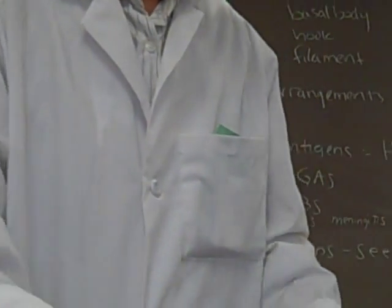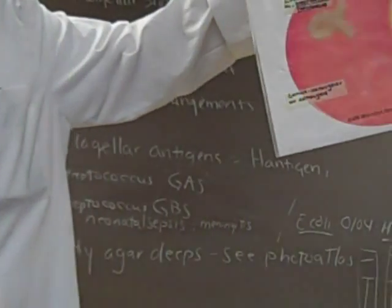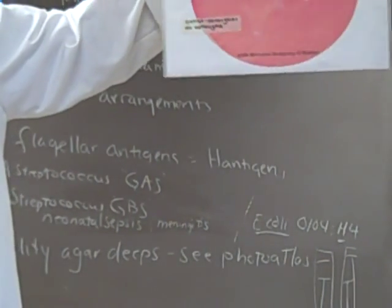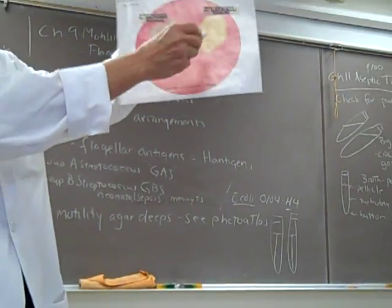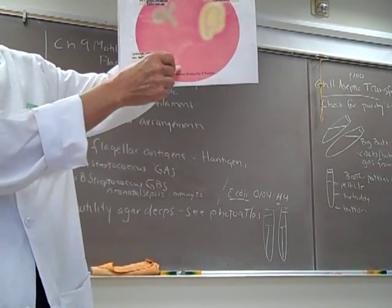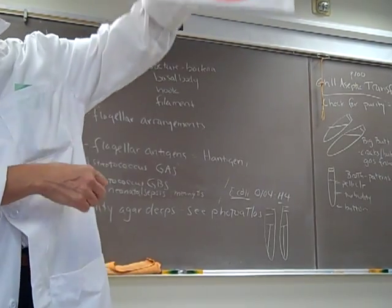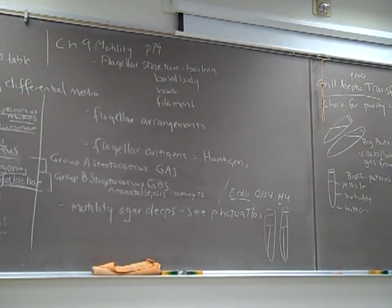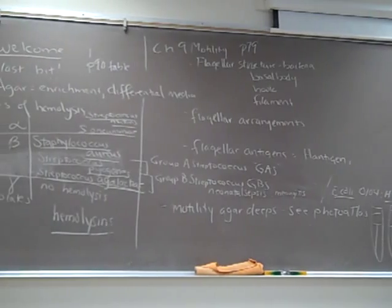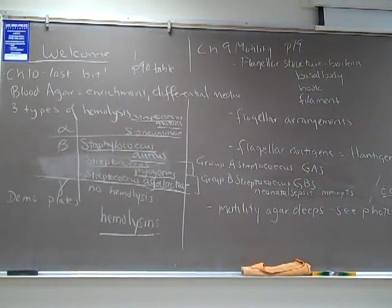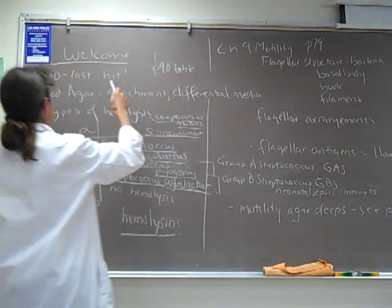Once again, the photo that Professor Holland downloaded is dynamite. The alpha, the beta, and you can't even see the gamma down here because the bacteria are growing but there's no change in the medium.